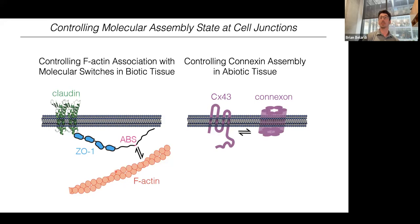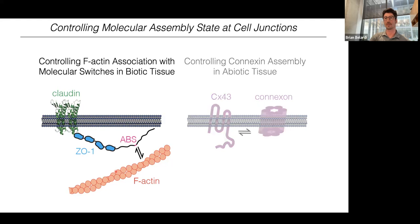That's what I'll be talking about today — our early efforts in controlling molecular assembly of cell junctions. In the first half of the talk I'll focus mainly on living or biotic tissue and our efforts to control different macroscopic properties there. In the second half, I'll transition into abiotic or artificial tissue composed of synthetic cells. Let's dive right into the first part.